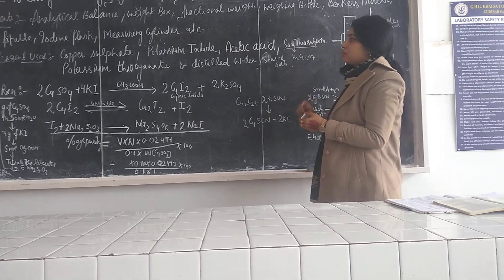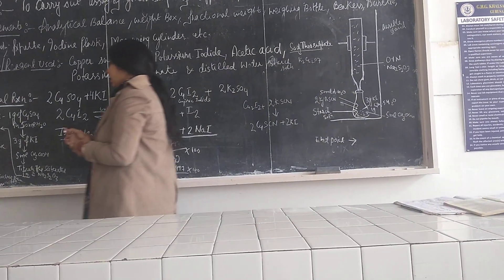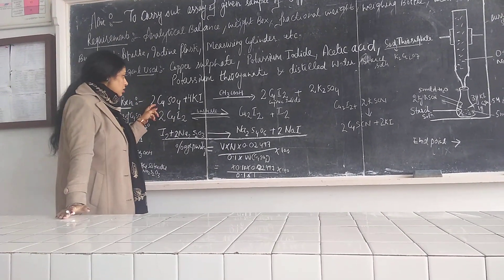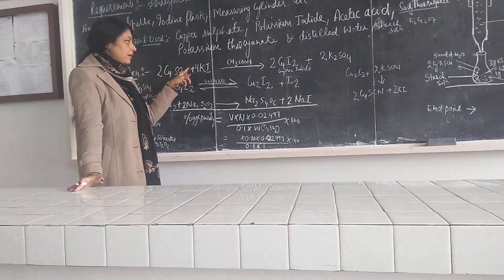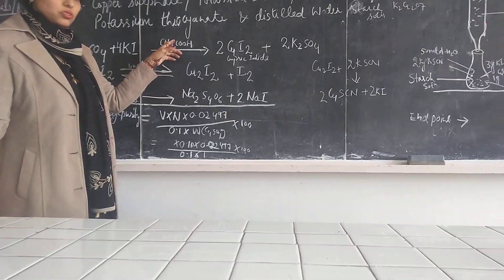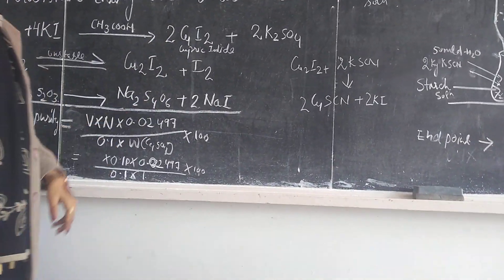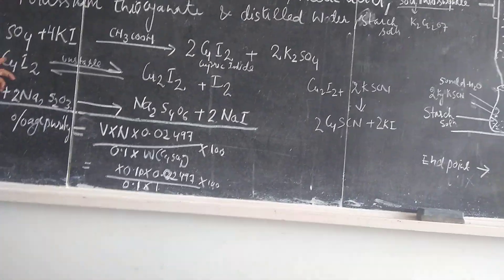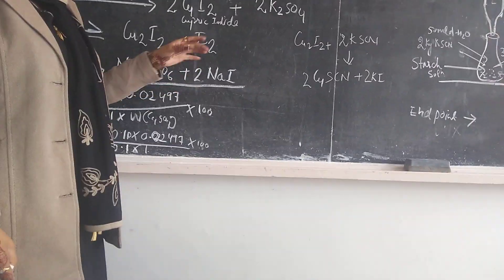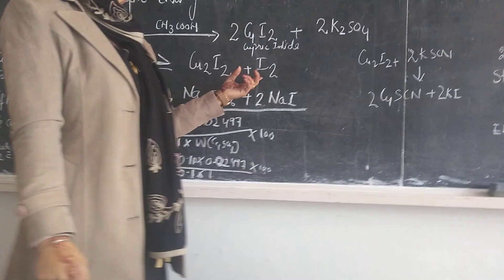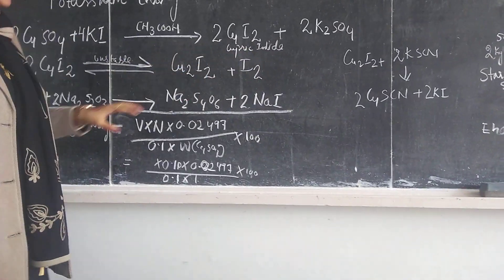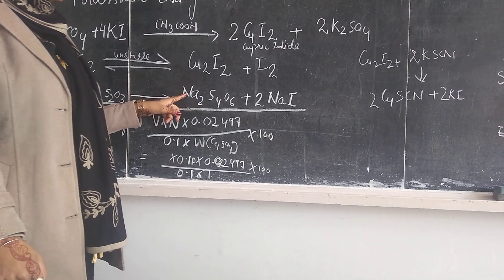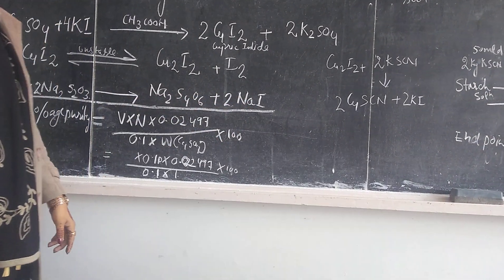Potassium dichromate is particularly used to standardize our sodium thiosulfate solution. The principle is: the sample of copper sulfate is reacted with potassium iodide in the presence of STKC to form cupric iodide. The cupric iodide formed is very unstable in nature, so it decomposes into cuprous iodide along with free iodine.